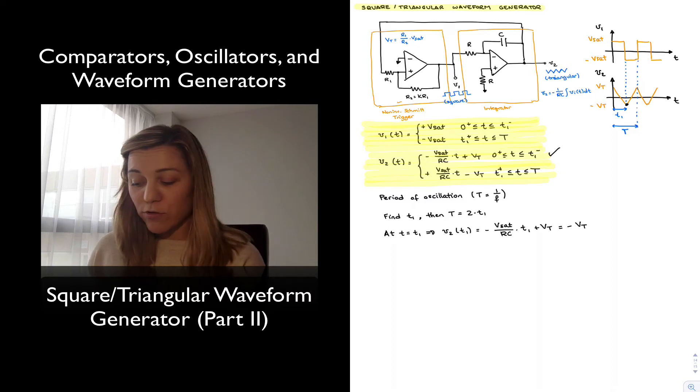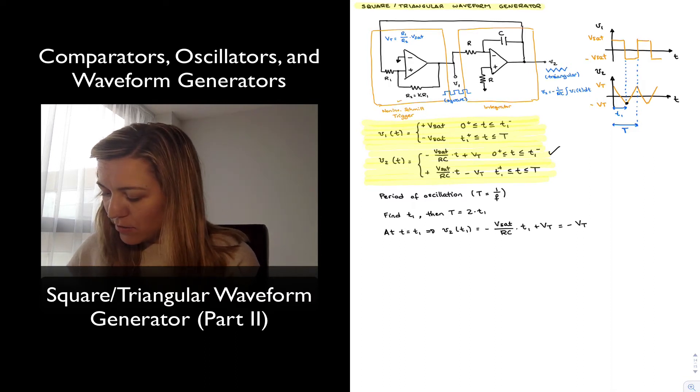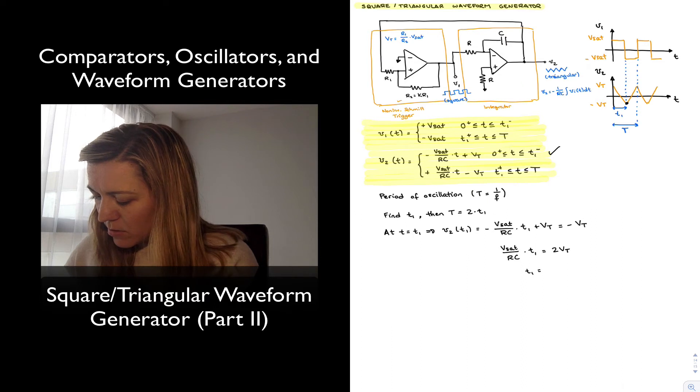And now I can solve for T1, and I will have that vSat over RC times T1 is equal to 2 times vT, and therefore my T1 is going to be equal to 2 vT RC divided by vSat.